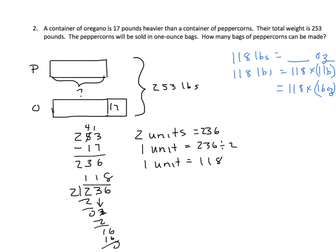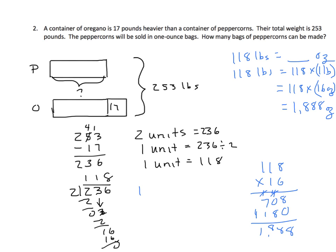So now we're going to multiply 118 times 16. 6 times 8 is 48, regroup. 6 times 1 is 6, plus 4 is 10, regroup. 6 times 1 is 6, plus 1 is 7. Put in our zero because now we're multiplying from the tens place — we're multiplying by 1, so we just copy that number down. Finding the sum of our partial products, our answer is 1,888 ounces. Now we're going to put that into a statement: 1,888 bags of peppercorns can be made.